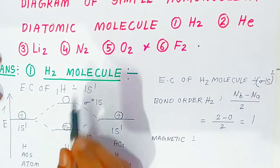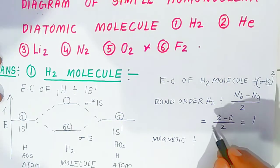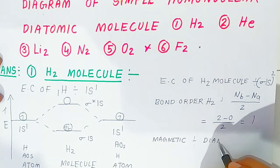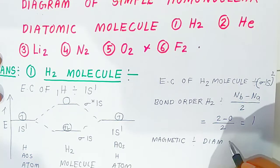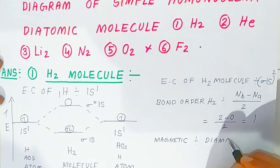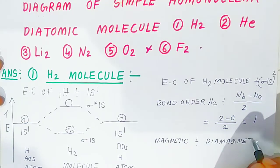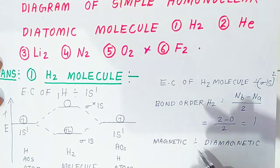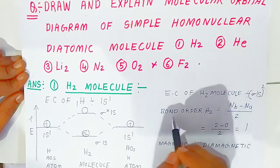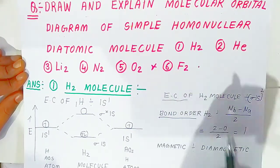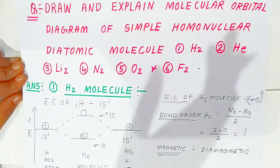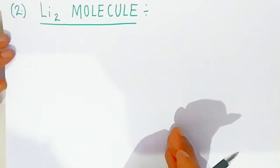Now for the magnetic property of the hydrogen molecule — there are no unpaired electrons. When all electrons are paired in the orbitals, the molecule is called diamagnetic. So the magnetic property of hydrogen molecule is diamagnetic in nature.